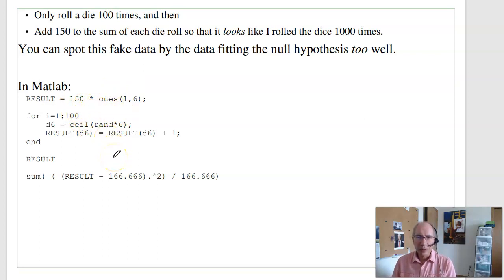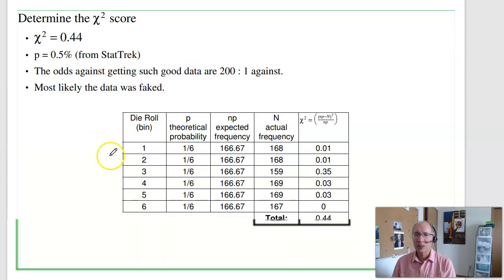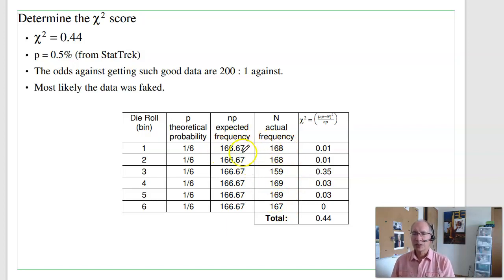A chi-squared score will detect that the data fits the distribution too well. In MATLAB, what I'll do is roll 100 dice, then add 150 to each number. When I do that, here's what it looks like. I got 168 ones, twos, threes, fours, fives, and sixes, so it kind of looks okay. Each numbers are different, might be rolled dice. If I do the chi-squared test, take the difference-squared divided by 166, add them all up, I get 0.44. From a chi-squared test, a 0.44 means the probability is 0.5%. So, the odds are 201 against me getting data this good. Chi-squared tests can detect whether data was fudged.